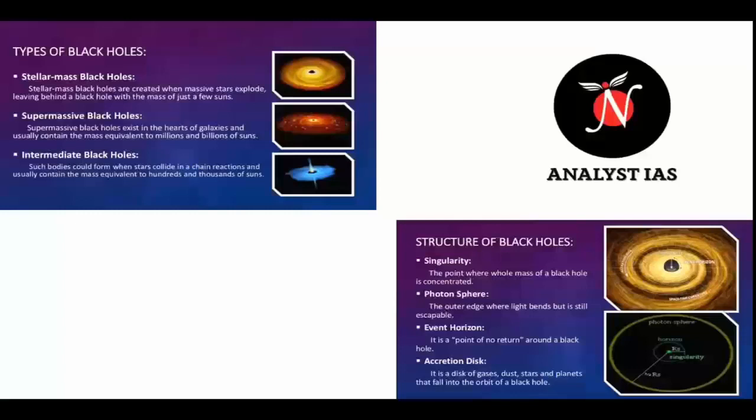The gases swirling around black holes actually help in getting their images. A very good example is the supermassive black hole at the center of the Milky Way galaxy — Sagittarius A. It has a mass equal to about 4 million suns and would fit inside a very large ball that could hold a few million Earths at its center.